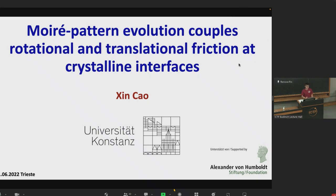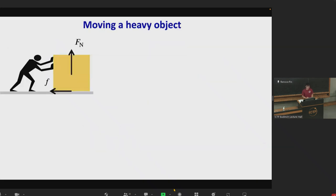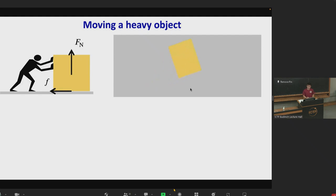My presentation today is Moiré Pattern Evolution, Couples Rotational and Translational Friction at Crystalline Interfaces. In daily life, when you try to push a heavy object, you intuitively do it in such a way that you rotate and translate it at the same time, because by doing so, the force required to depin the object would be significantly smaller.